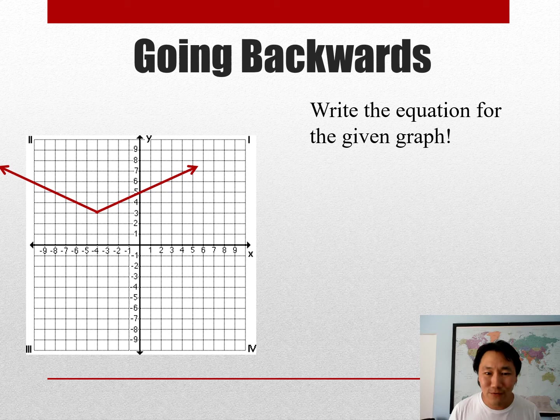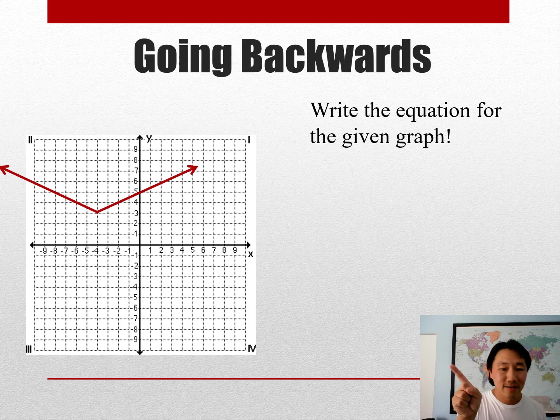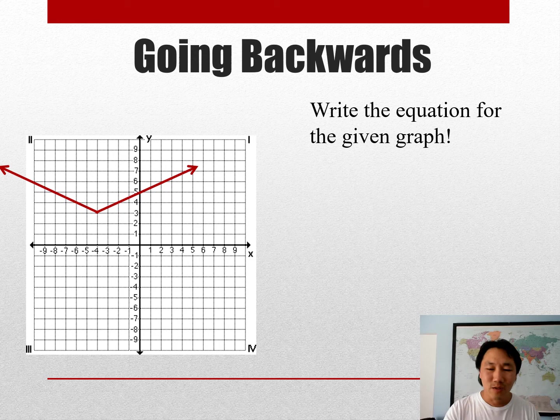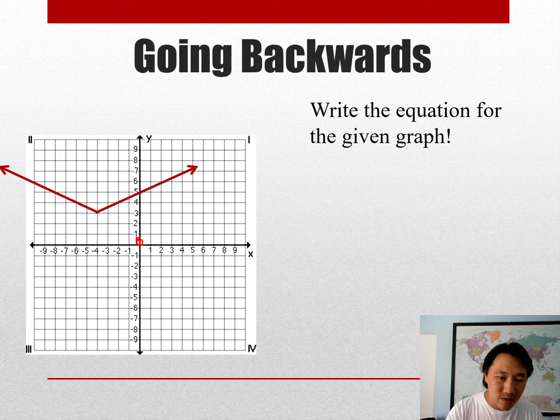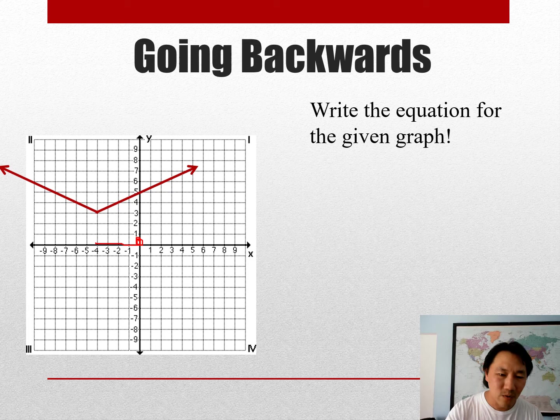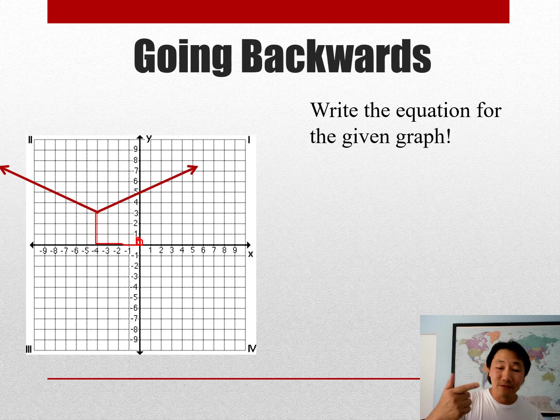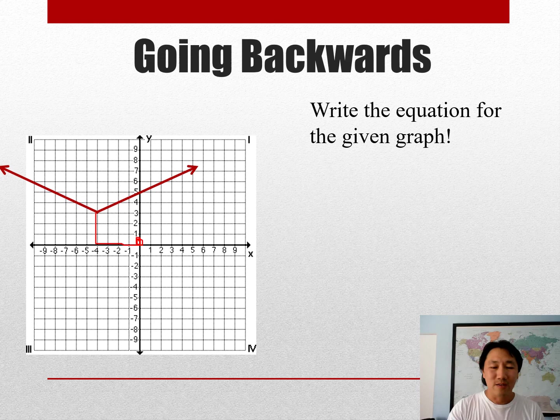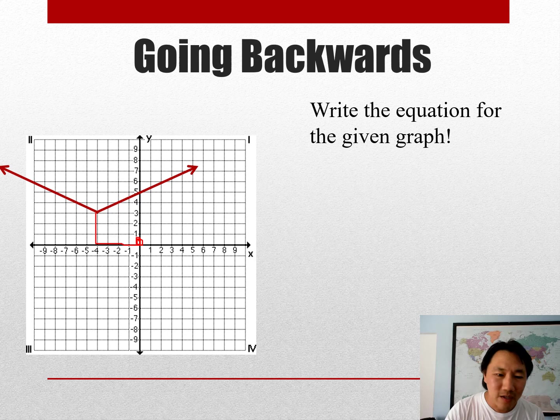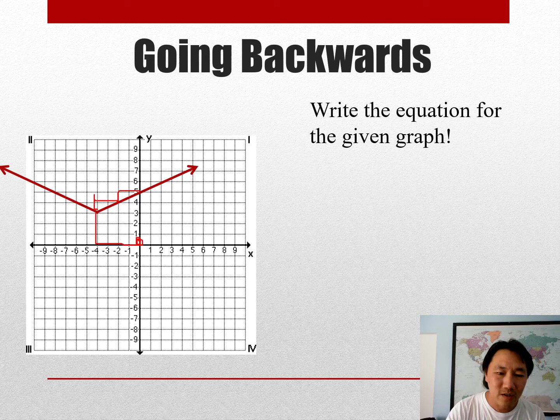All right, and we're already at our last slide for the day: going backwards. What if I give you the graph and you have to come up with the absolute value equation? That's not too bad. You always start at the zero zero and then see how much you move to the left. It looks like you move to the left four and then up three. So moving to the left four means you put it in the parentheses, and then up three means you put it outside of the parentheses.